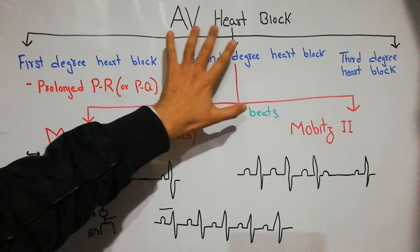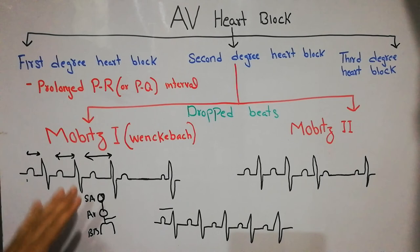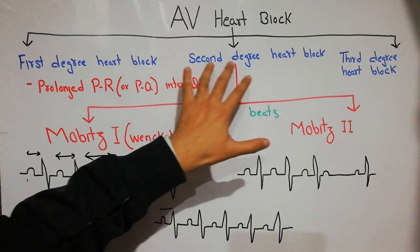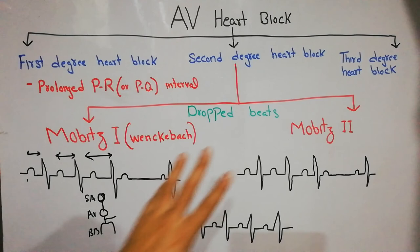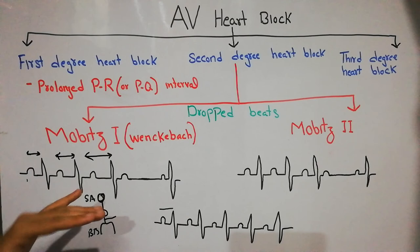To summarize: AV heart blocks show a problem in the AV node or Bundle of His. If there is a slight delay but every impulse is conducted, it causes first degree heart block with a prolonged PR or PQ interval. In second degree heart block we have drop beats, which are of two types: in Mobitz Type 1 (Wenckebach), the PR interval increases continuously until a drop occurs; in Mobitz Type 2, the PR interval is normal and a drop beat occurs without progressive prolongation. Thanks for watching this video.